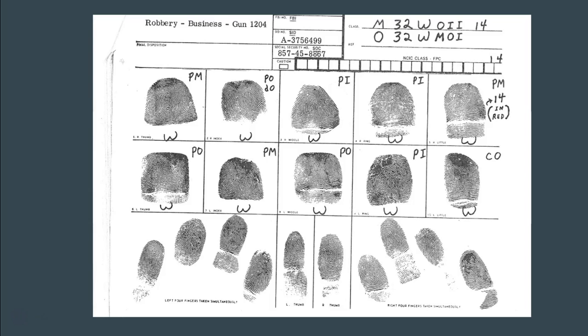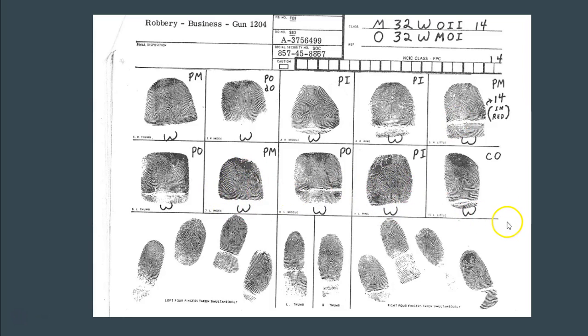On the other hand, if every fingerprint is a whorl, the even-numbered fingers give: 16 plus 8 plus 4 plus 2 plus 1 equals 31, plus 1 is 32. The odd-numbered fingers also give: 16 plus 8 plus 4 plus 2 plus 1 equals 31, plus 1 is 32. So the maximum primary you can get is 32 over 32. A primary of 1 over 1 means no whorls; 32 over 32 means all fingerprints are whorls. That's how we do a primary.